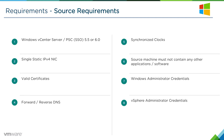The source machine should not contain any other software other than the vCenter server or PSE software. If, for example, it also contains SRM, Horizon View, or any other software that you may want to continue using, you should move that software off the Windows vCenter server first, because the vCenter server will be shut down as part of the migration process, so any other applications will also be shut down. We require the Windows administrator credentials for the machine, and also the vSphere administrator credentials, so that we can log into the vSphere environment and export the data.